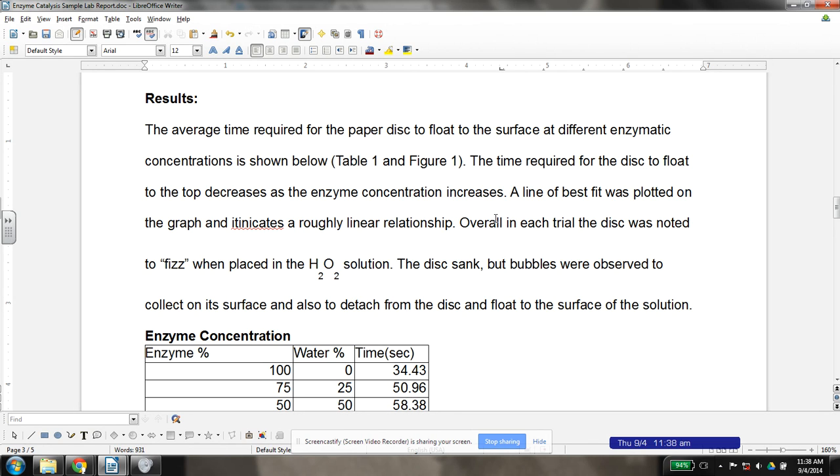One of the things that students often mix up on writing a results section is they don't distinguish results from conclusions. So, we need to make sure that we really do a good job of that. A results section is just the factual information or at least the summary of that. So, a trend in the data is a summary of it. But you notice that nowhere in this results section do I explain why the disk floated to the surface.